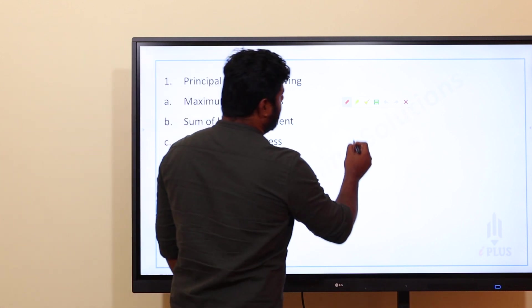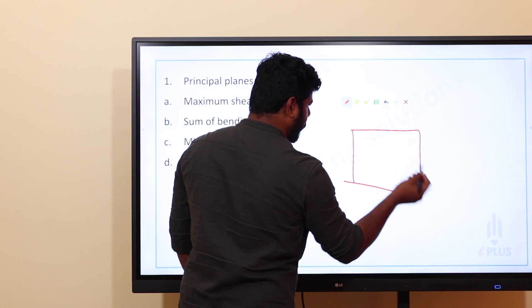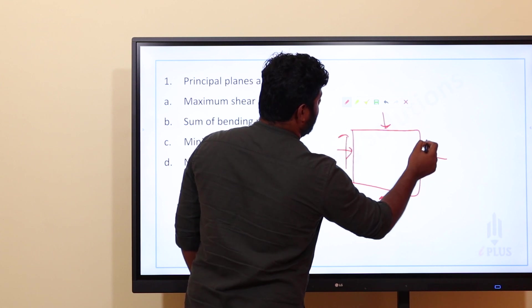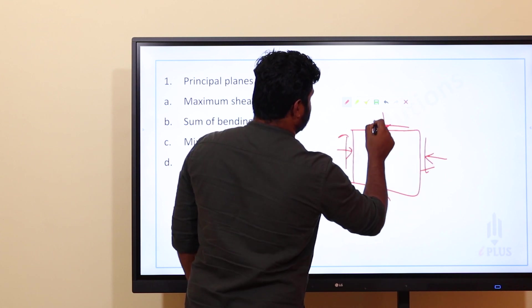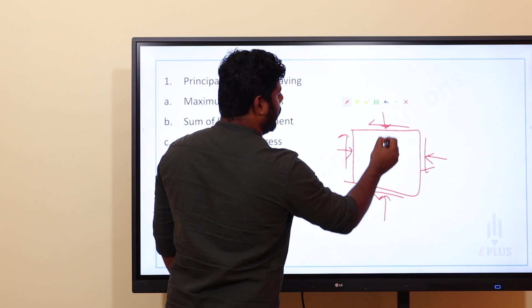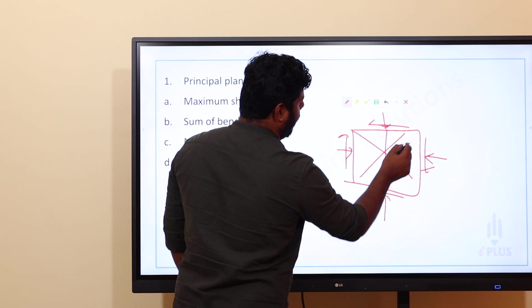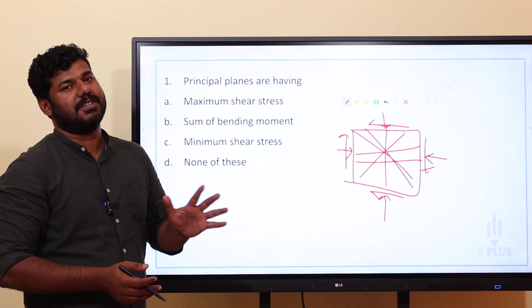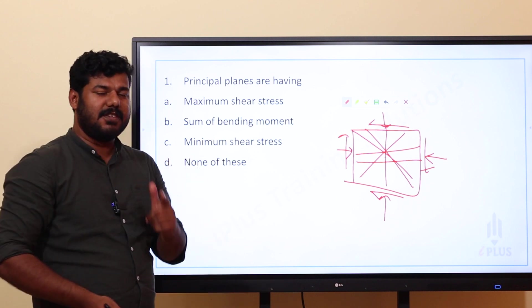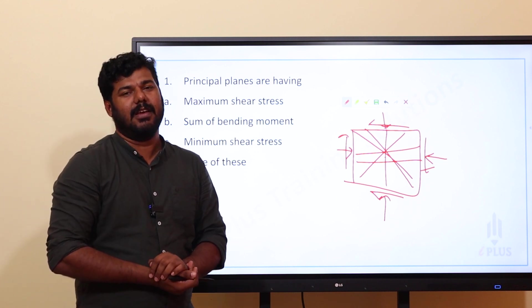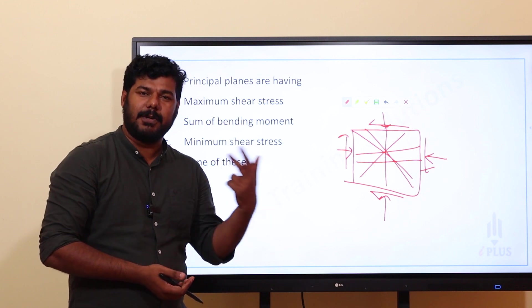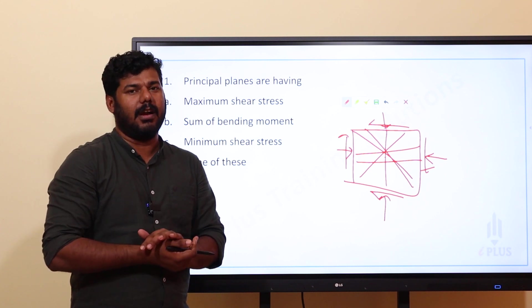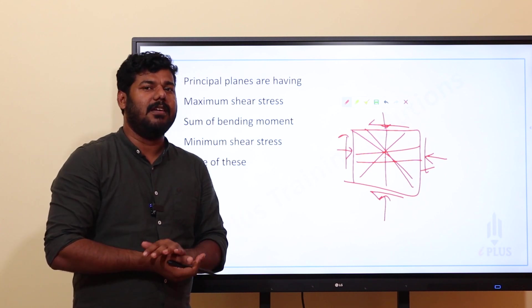What did we learn about principal planes? One aspect involves compressive stress; forces act as shear stress and normal stress. If we understand the number of planes, we are learning in which plane the value of shear stress is zero. When shear stress is zero, we have a principal plane — major principal planes and minor principal planes.